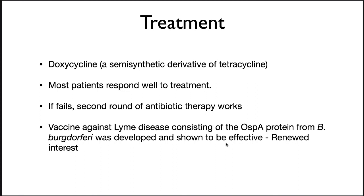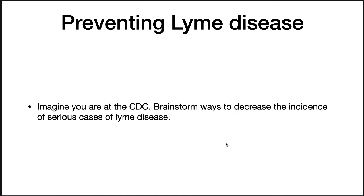Hopefully in the next few years we'll have one. Here's a discussion question: imagine you are at the CDC — brainstorm ways to decrease the incidence of serious cases of Lyme disease. There are a number of things you can come up with and none of them is really right or wrong. Number one: actually get the vaccine out there so that people who spend a lot of time outdoors in areas where this organism is present can get vaccinated. Another thing is education — educate physicians and people in endemic areas about the symptoms of Lyme disease, because if you treat this early you can eliminate it before it causes too much damage.